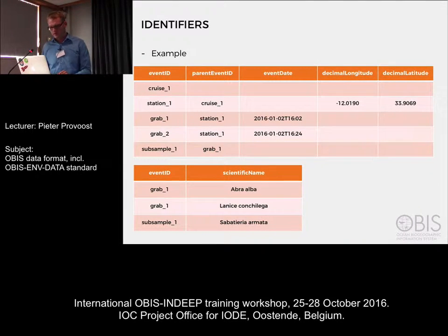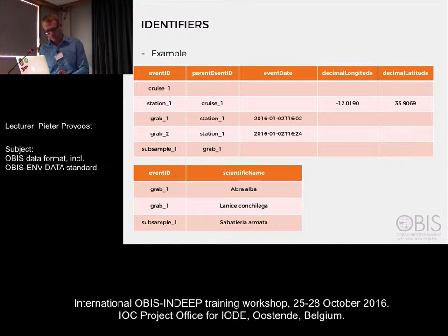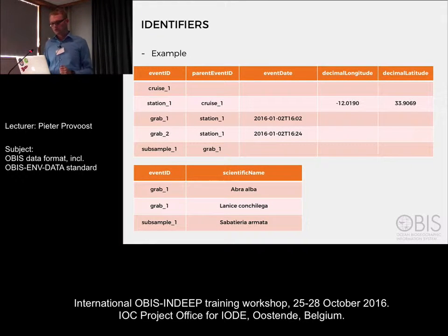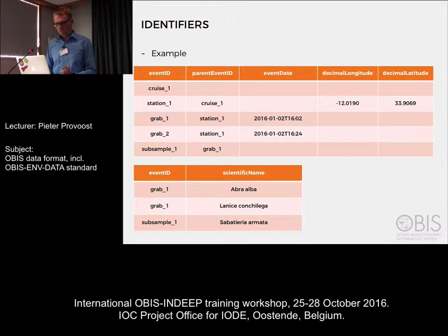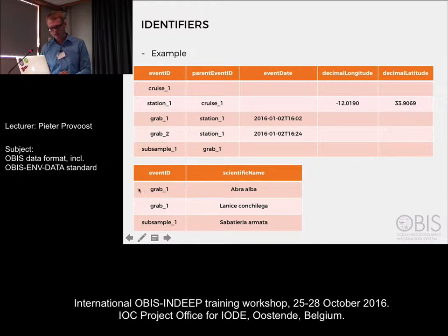In a small example: the event table has a record for the cruise, a record for the station, then two grabs and a subsample. The station is linked to the cruise, the grabs are linked to the station, and the subsample is linked to the grab. Instead of replicating all location and date information in all records, I can just add the location information to the station and the time information to my individual samples. You can then create an occurrence table and using event ID link those occurrence records to the events. For example, two macrofauna occurrences in the grab and one meiofauna occurrence in a subsample.